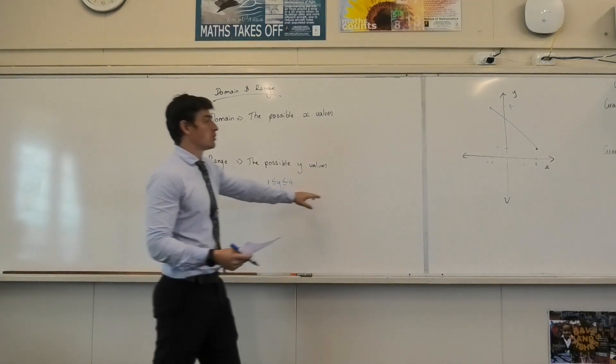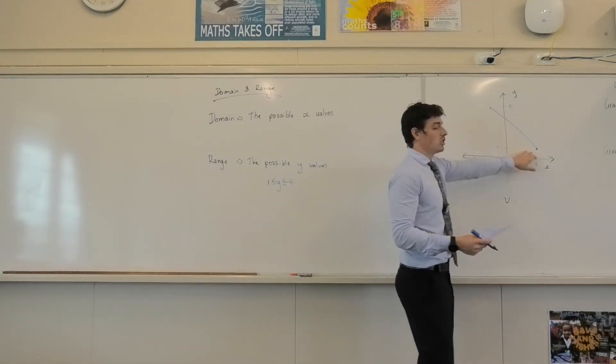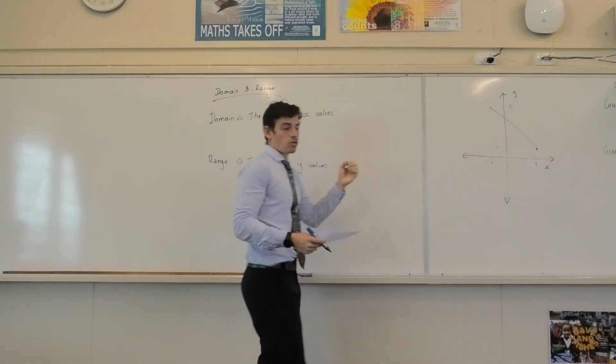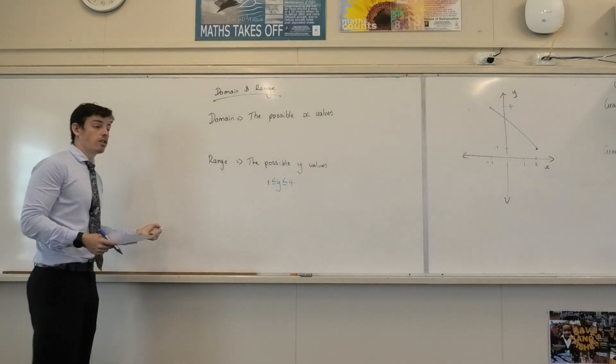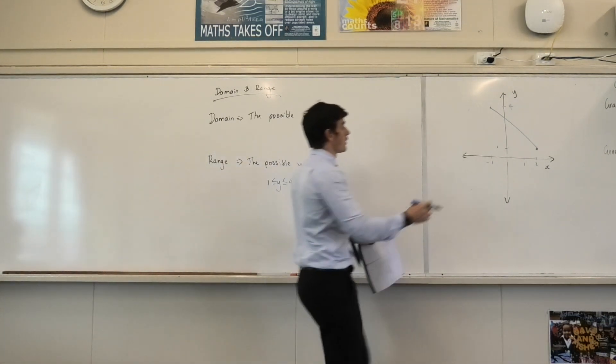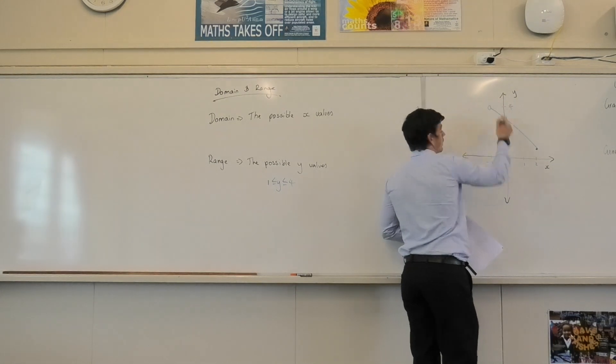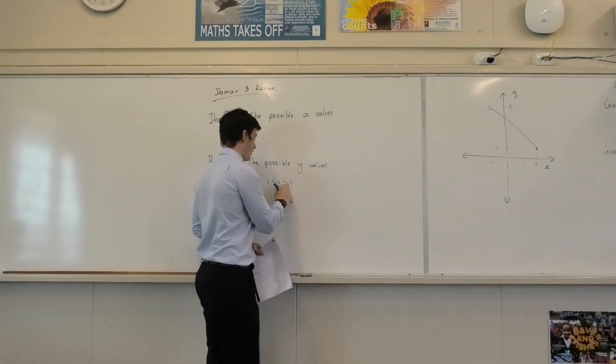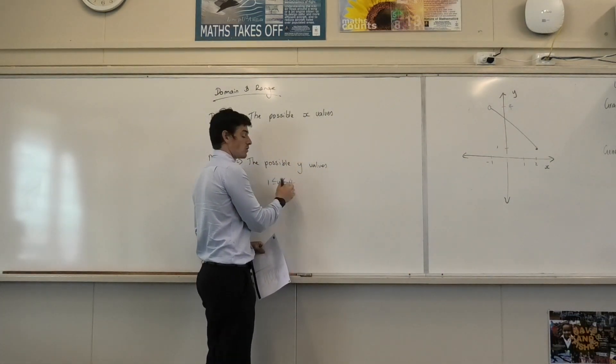Now it's including because the circles are coloured in. Remember last year we did open circles and closed circles. If it's closed, it's included. If it was a closed circle, like an open circle like this, I would simply get rid of the line underneath there because it's not included.